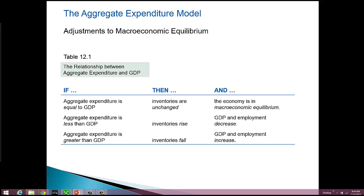When inventories start to rise, that's a signal to businesses. Businesses are constantly watching their inventory levels, and when they see inventory levels creep up, they're going to cut back on production. That's a signal that spending has slowed down, and they've only got so much warehouse space — they don't want to outgrow it. So when inventories go up, businesses cut back, which drags down GDP. And when they cut back on production, they need fewer people, so they start laying people off and employment goes down.